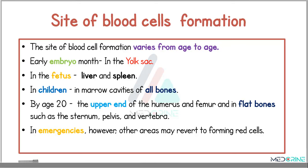By the age of 20 years, the upper end of the humerus, the femur, and flat bones — for example the sternum, pelvis, and vertebra — are involved in blood cell formation. During emergencies, other areas may revert to the formation of blood cells.